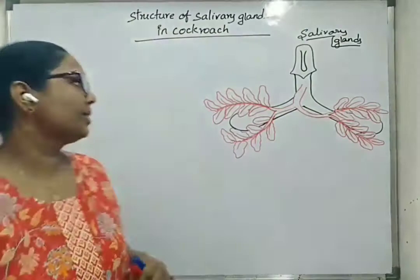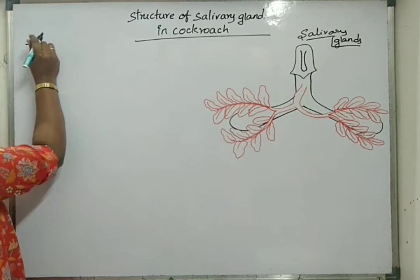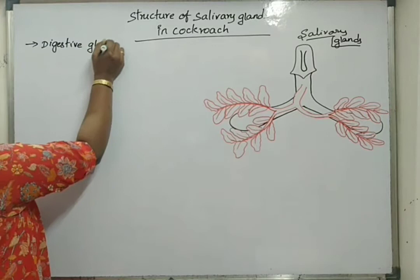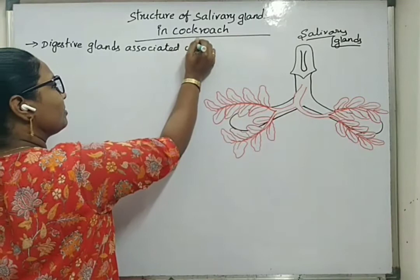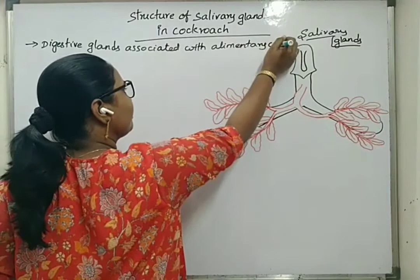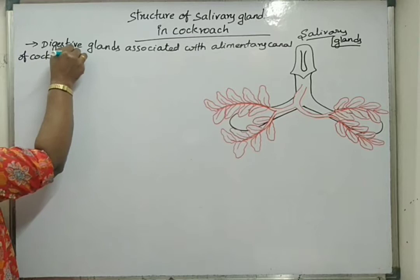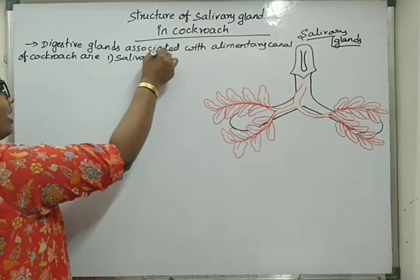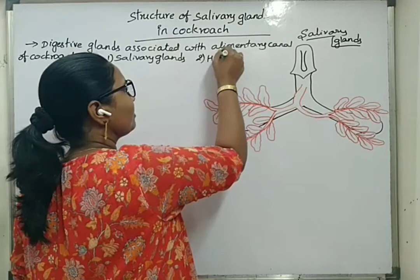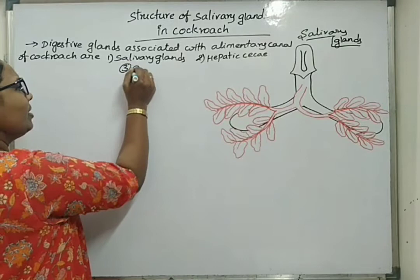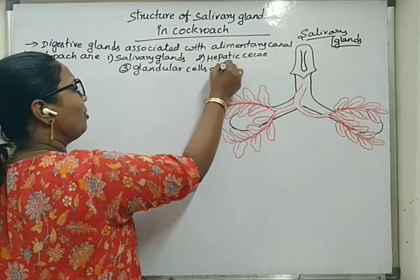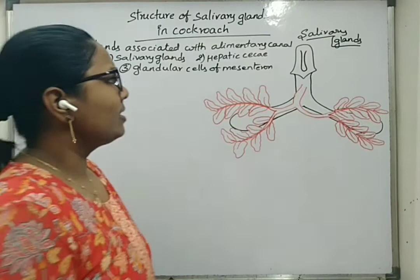Now we will start with salivary glands of cockroach. You will write that point also. Digestive glands associated with the alimentary canal of cockroach are: first, salivary glands; second, hepatic caeca; and third, glandular cells of mesenterone.